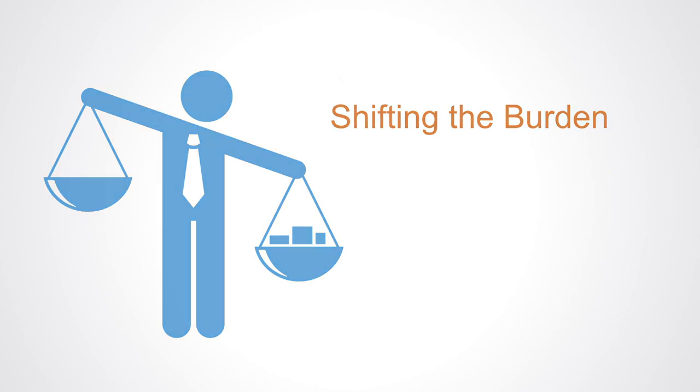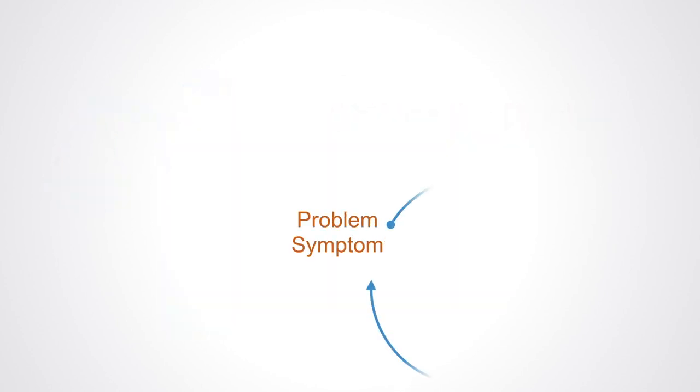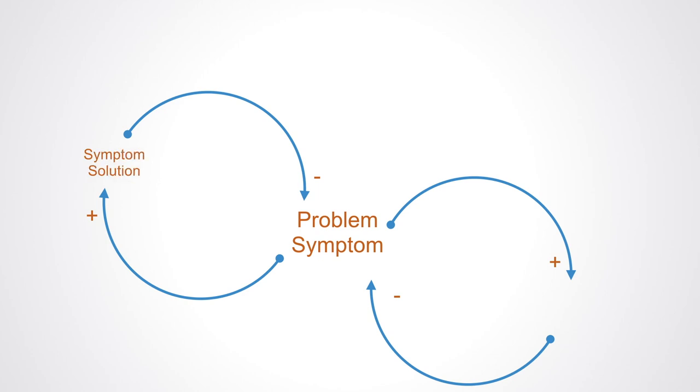This system archetype consists of two balancing loops or processes. Both are trying to correct the same problem-symptom and bring the system back to balance. The above circle represents the quick-fix symptomatic intervention. It often solves the problem-symptom rapidly, but only momentarily.